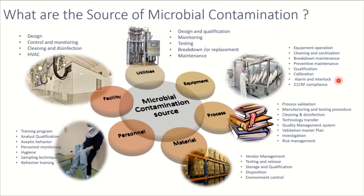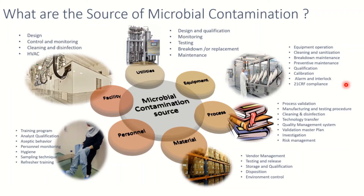For example, if you are running a sterilizer and steam pressure is low and you are not getting an alarm, when the temperature drops for a certain time your cycle will be reset or voided. That is how alarms and interlocks are connected to microbial contamination control.